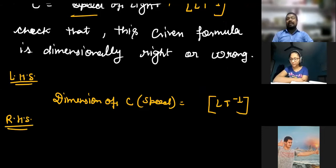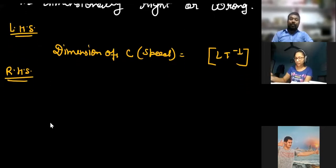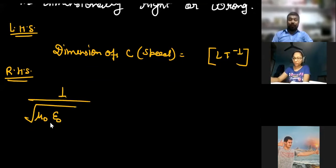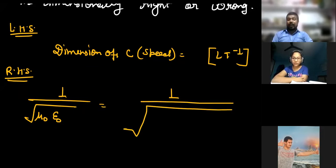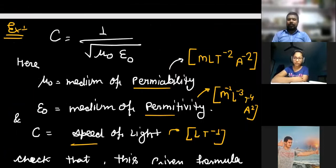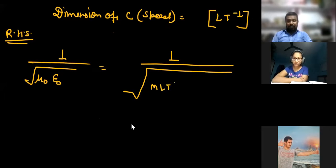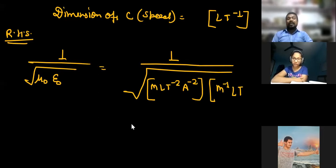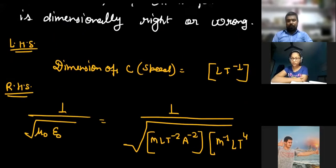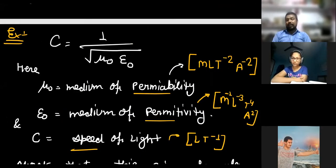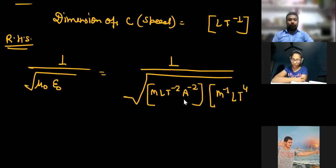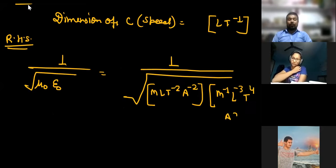On the right-hand side we have 1 upon square root of μ₀ε₀. First, let us write the dimensions. The dimension of ε₀ is M⁻¹L⁻³T⁴A². For μ₀, its dimension includes M¹L¹T⁻² and A⁻². Now writing them together: M to the power minus 1, L to the power minus 3, T to the power 4, and A to the power 2.